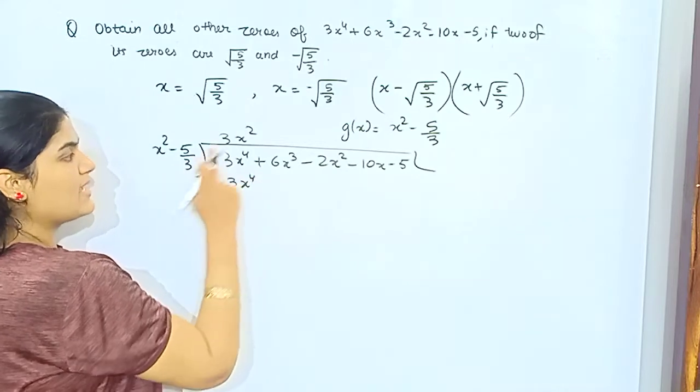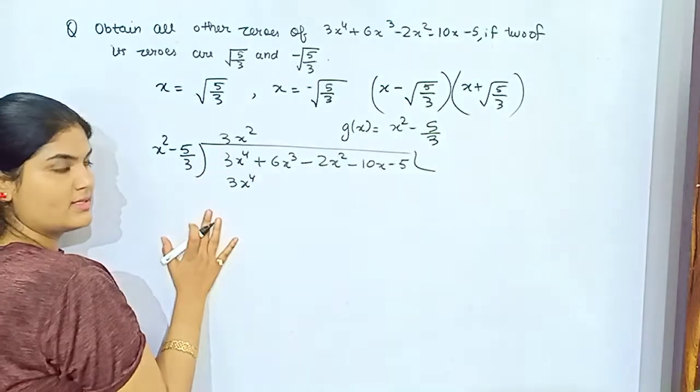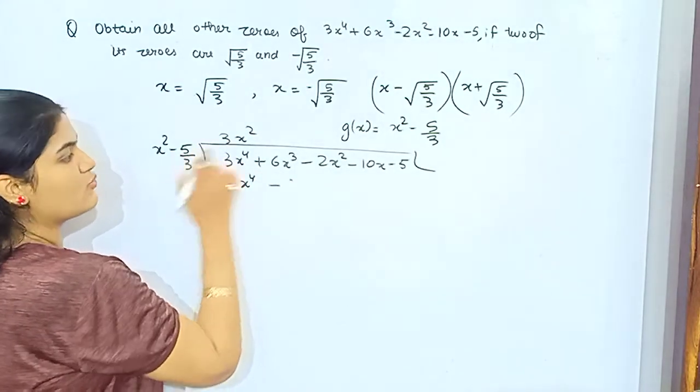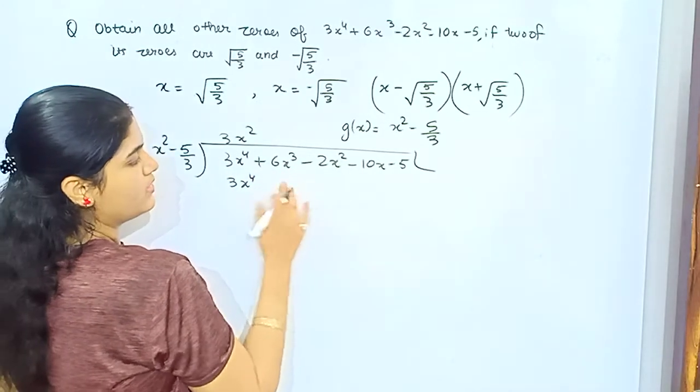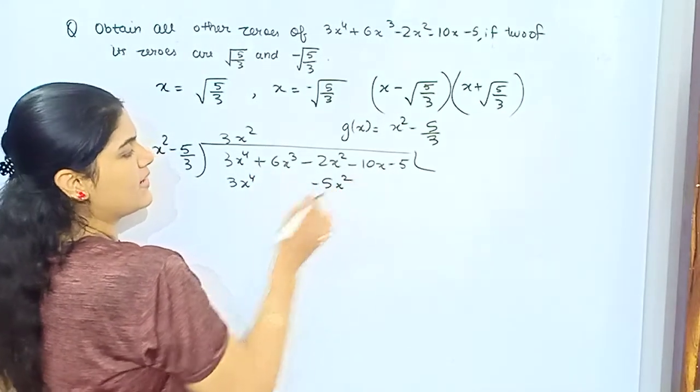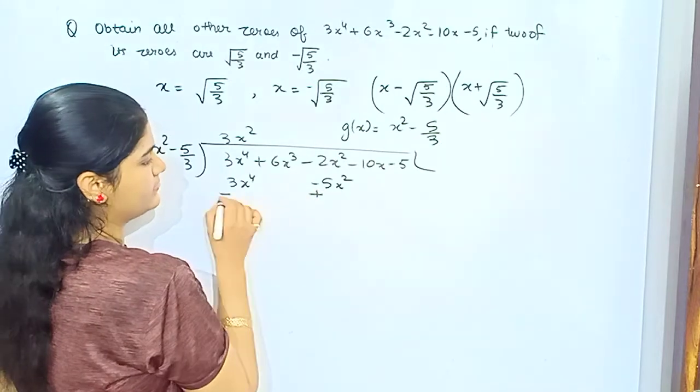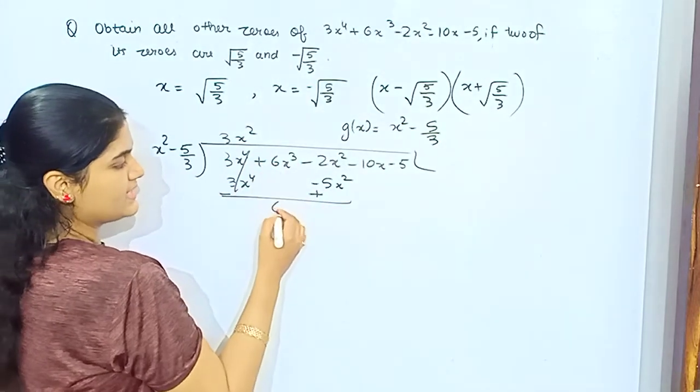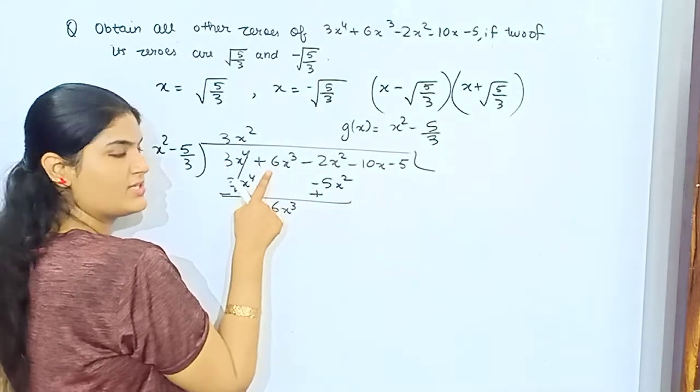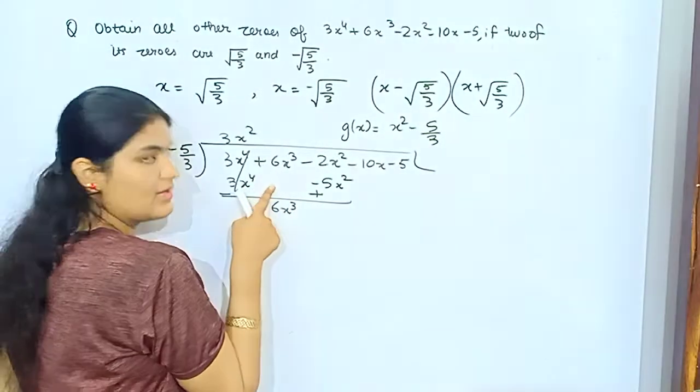If you multiply this with this, 3 will be cancelled, so -5x². This is x³, so -5x³.